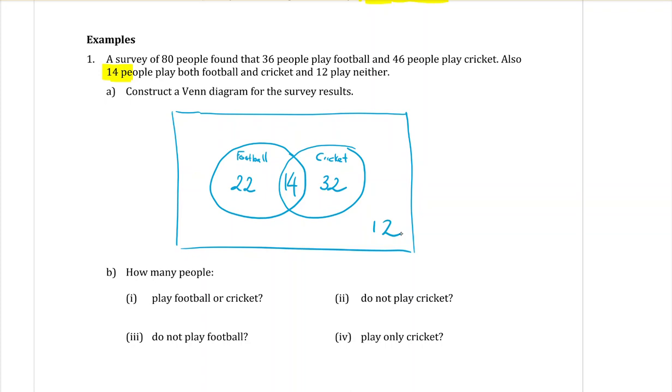Now as a double check, you should add up all of those numbers and make sure that they add to 80. We're told there was 80 people in the survey. So 20, 30, 40, 50, 60. Does it work? Good. So making sure our data works, then we're ready to answer some questions.